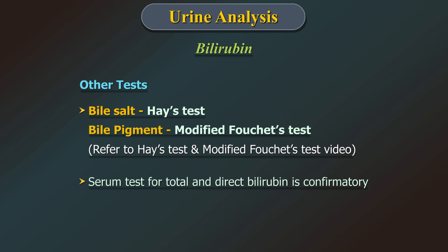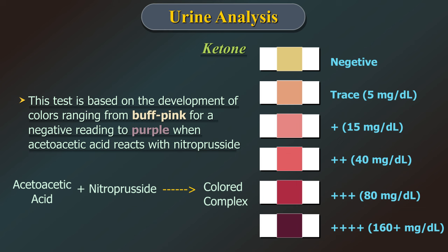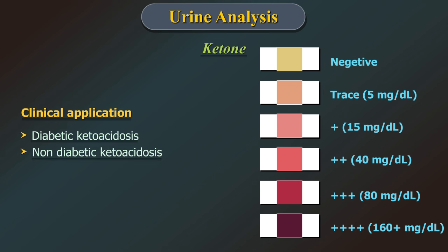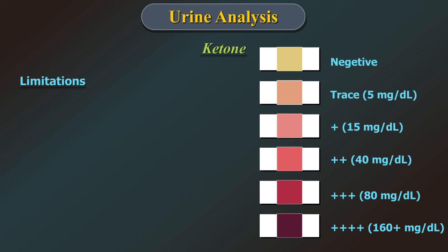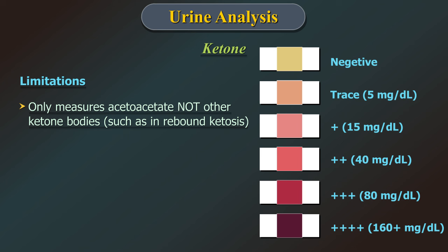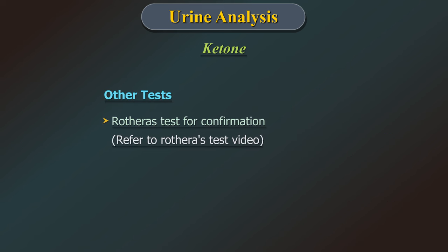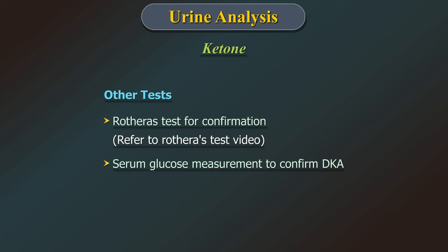Ketone: this test is based on the development of colour ranging from buff pink to purple when acetoacetic acid reacts with nitroprusside. Clinical application is for detecting diabetic ketoacidosis, non-diabetic ketoacidosis as found in starvation or extreme febrile state, and lactic acidosis. Limitations: it only measures acetoacetate, not the other ketone bodies. High specific gravity and low pH urines may give false positivity. Other tests include Rothera's test for confirmation and serum glucose measurement to confirm diabetic ketoacidosis.